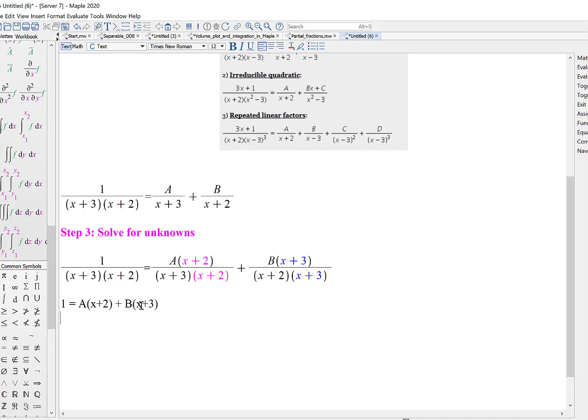Let's distribute. Let's collect like terms. On the left-hand side, I have 0x plus 1. On the right-hand side, I have A plus B amount of x plus, in terms of my constants, I've just got 2A plus 3B.